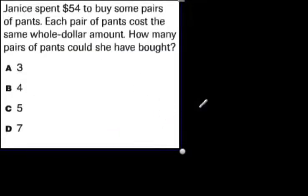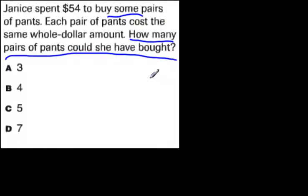We're going to go to another problem that you can solve. Janice spent $54 to buy some pairs of pants. Each pair of pants cost the same whole dollar amount. Equal prices, equal sharing of this money that was spent. How many pairs of pants could she have bought? If she spent $54 on pairs of pants and they each cost the same amount, we need to know is 54 divisible by 3, by 4, by 5, or by 7? Try your divisibility rules or maybe try some long division.